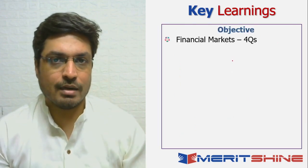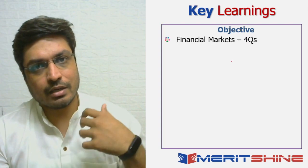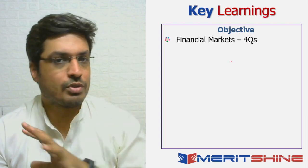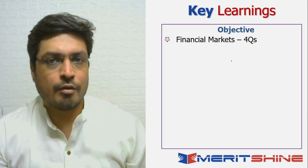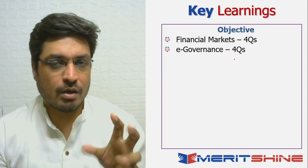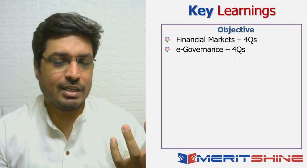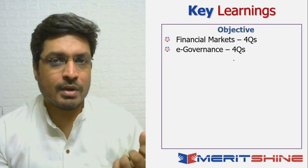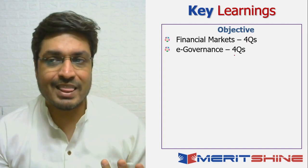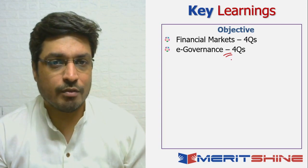Moving to another important aspect — what were the major segments from where the questions appeared in the objective section? There were four questions from financial markets, which includes capital markets, equity markets, and financial ratios. There were four questions from e-governance — or what you might call the changing landscape in the banking sector or fintech — but I prefer to call them e-governance because they involve improving governance through technology.